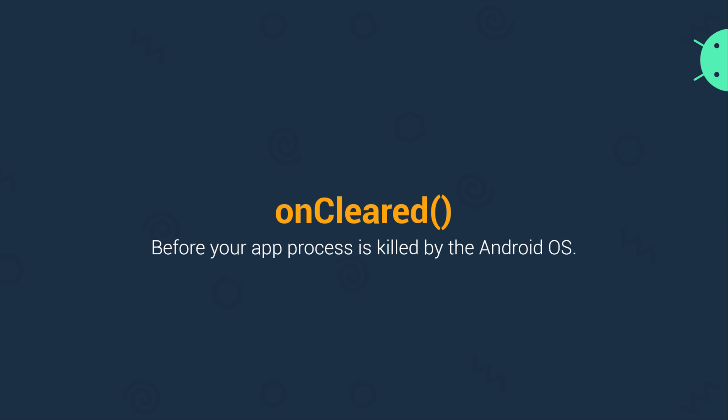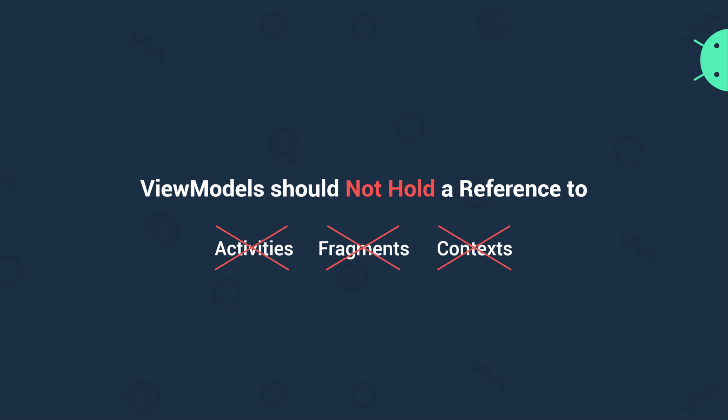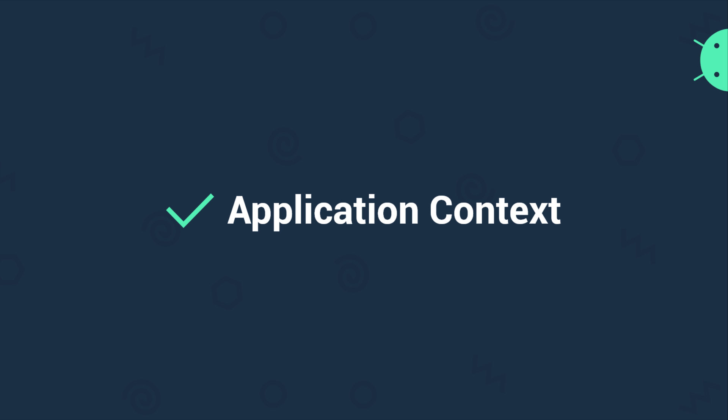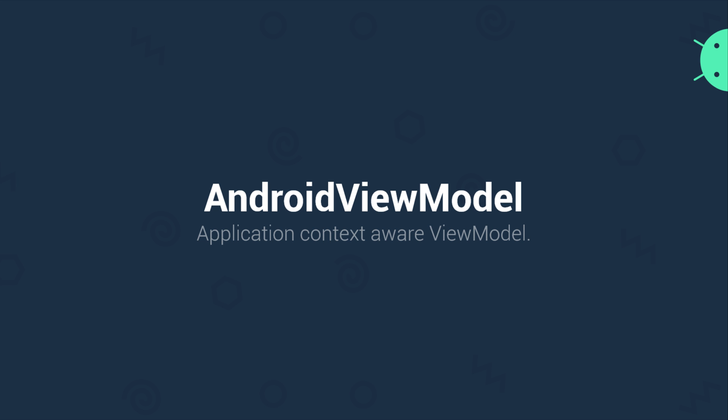One important thing to remember: ViewModels should not hold a reference to activities, fragments, or contexts. ViewModels should not contain elements that reference UI controllers such as views. There is one exception — sometimes you might need an application context for use with system services. Storing application context in a ViewModel is okay because application context is tied to the application lifecycle, unlike activity context which is tied to the activity lifecycle. If you need application context you should extend the AndroidViewModel class instead, which is simply a ViewModel that includes an application reference.